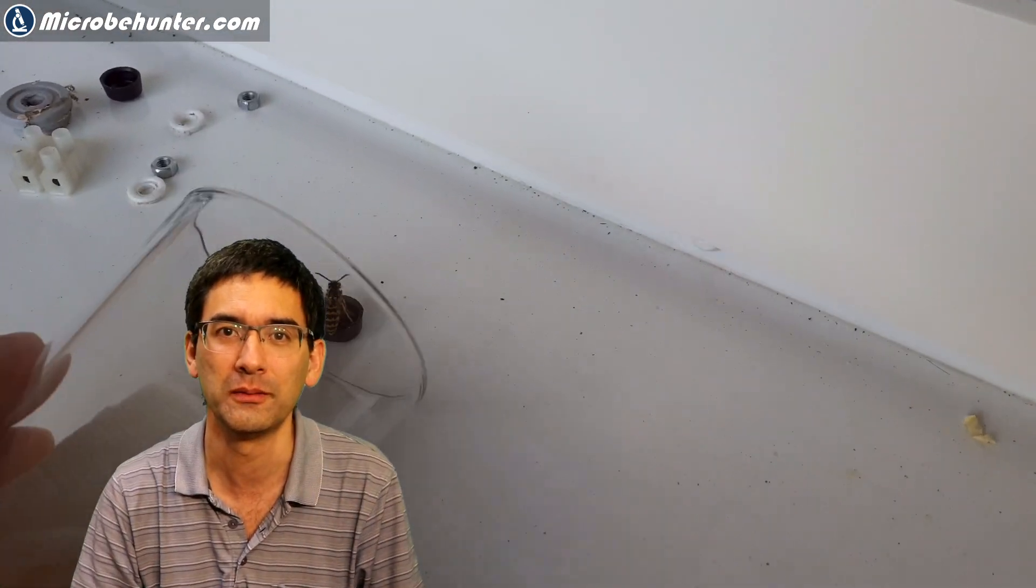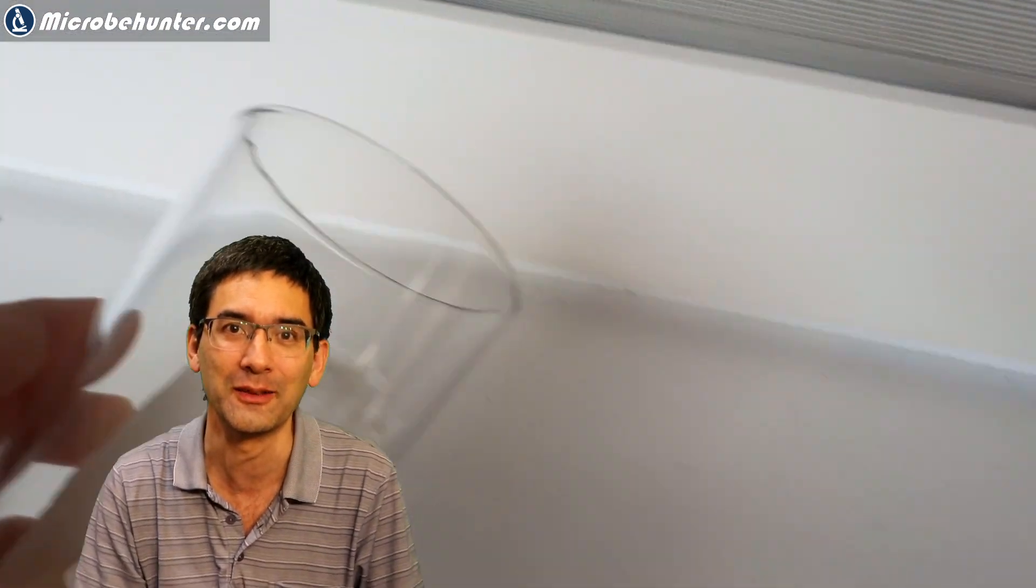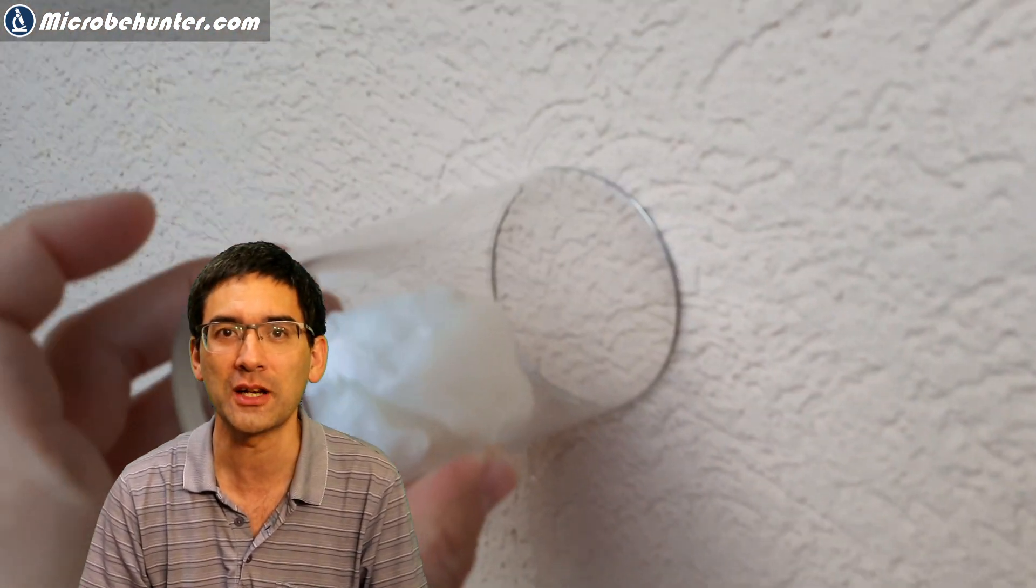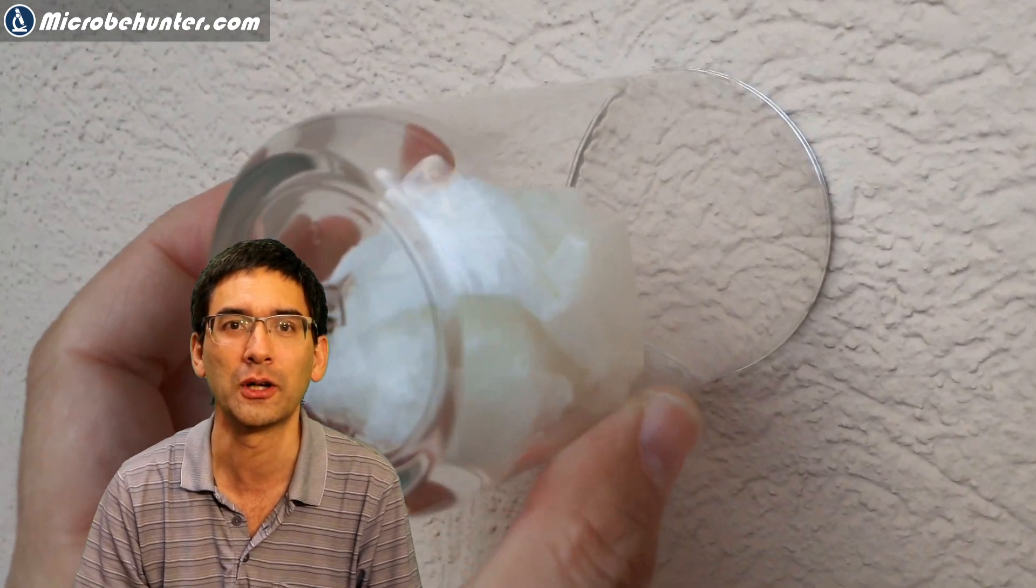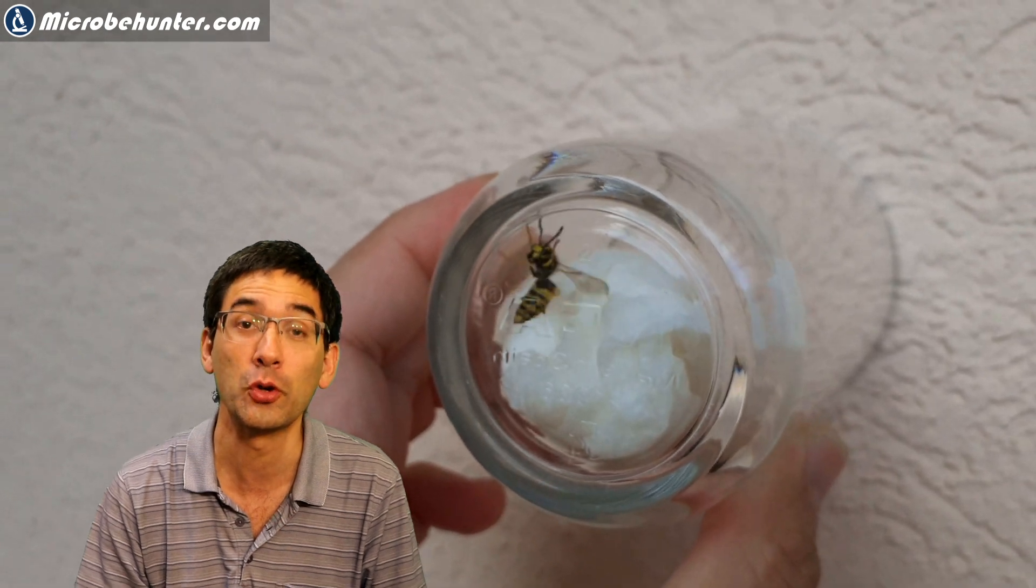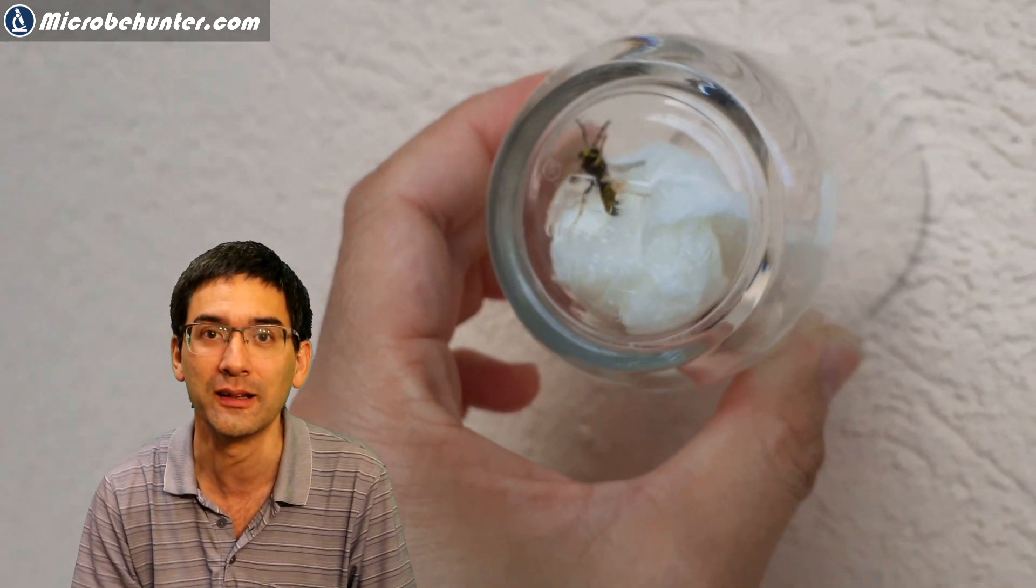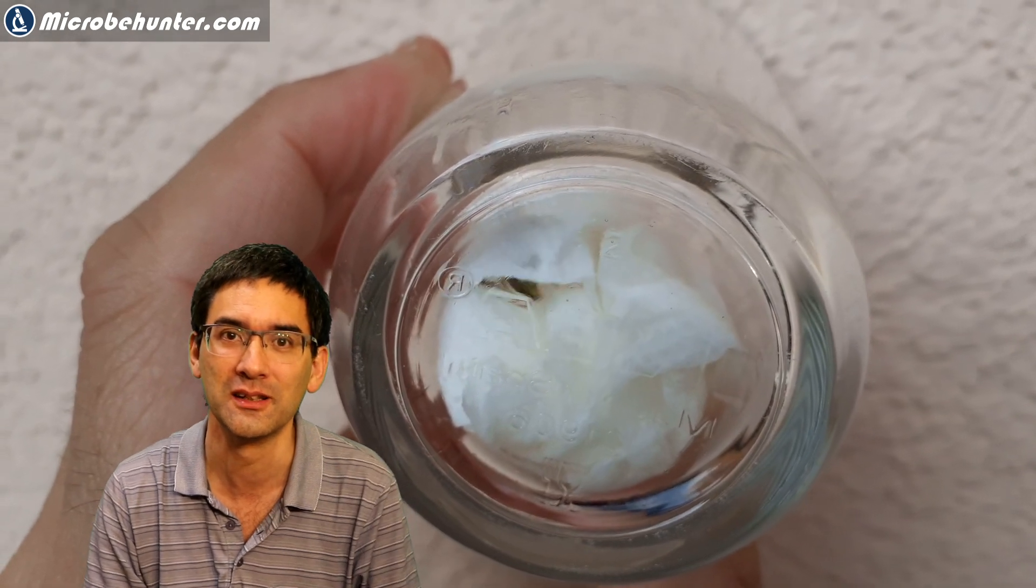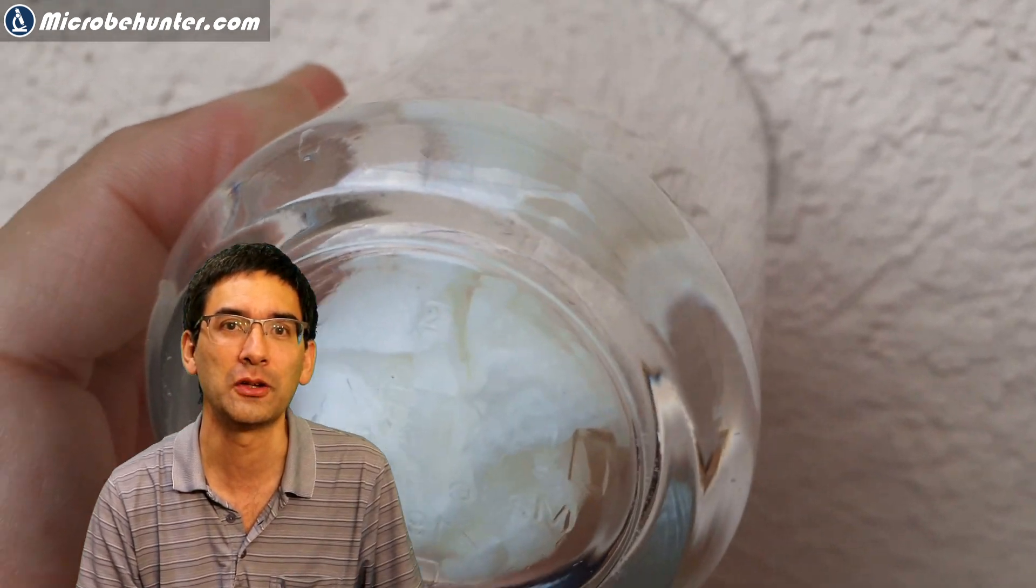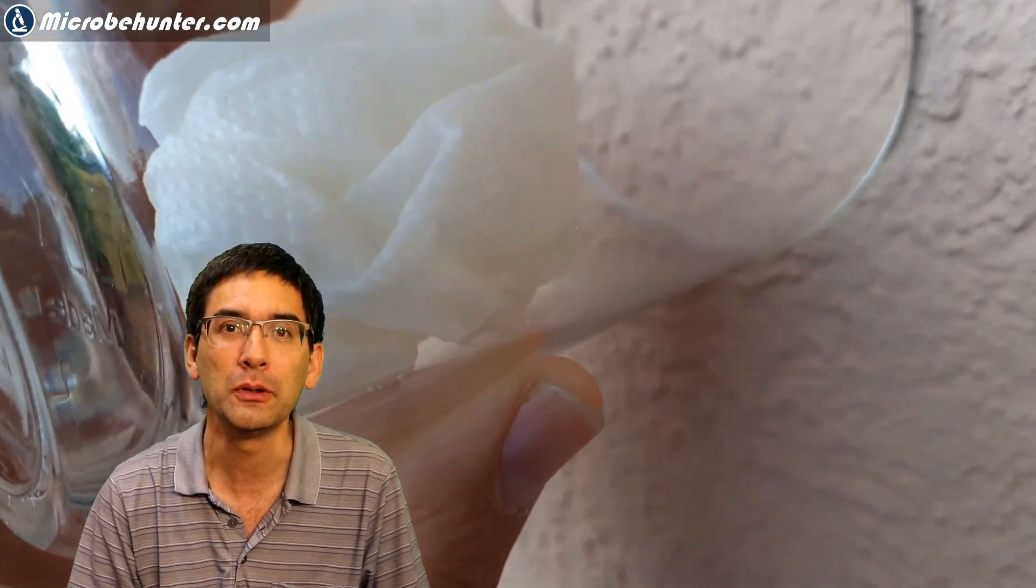And of course, the fumes kind of killed the wasp. And therefore, I could easily put it under my stereo microscope. Catching them was actually not so difficult. And after a couple of minutes, I could actually then put it under my stereo microscope. And then I also decided to dissect it a little bit and to extract the stinger. Here you can still see the wasp moving around a little bit. And after a couple of minutes, I could easily manipulate it.